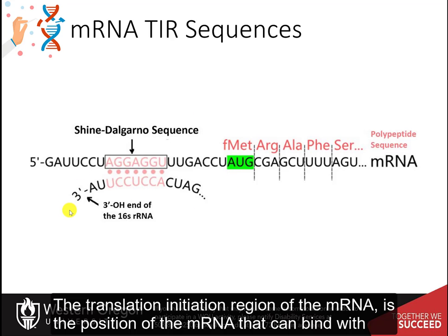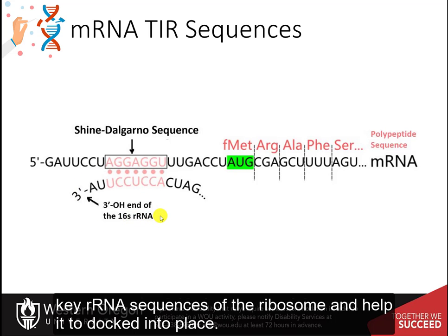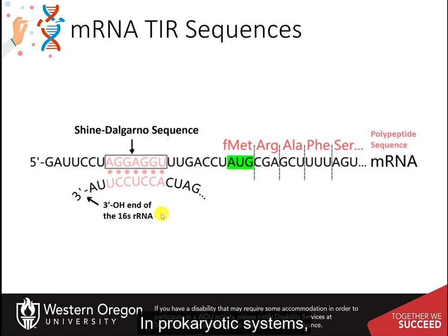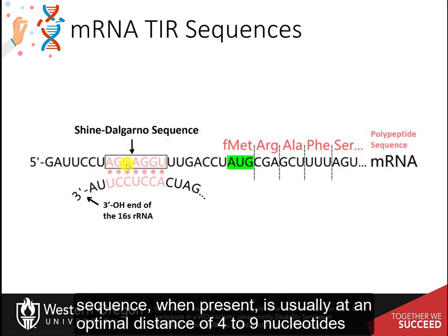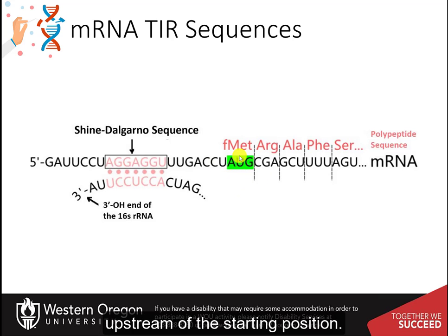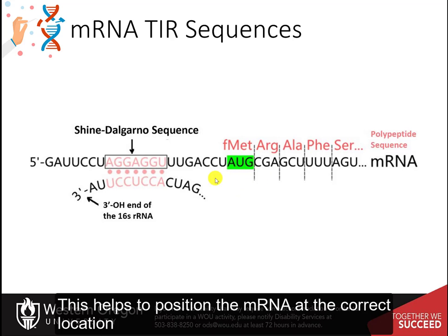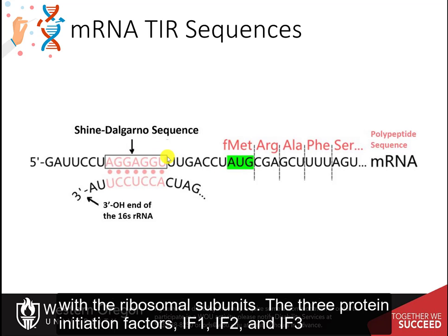The translation initiation region of the messenger RNA is the position of the messenger RNA that can bind with key rRNA sequences of the ribosome and help it to dock into place. In prokaryotic systems, one common TIR is known as the Shine-Dalgarno sequence, or SD sequence. The SD sequence, when present, is usually at an optimal distance of 4 to 9 nucleotides upstream of the starting position, helping to position the messenger RNA at the correct location with the ribosomal subunits.